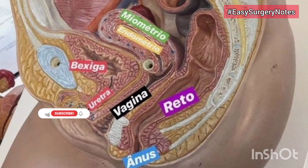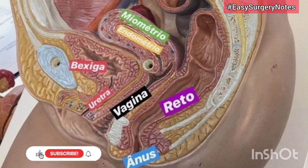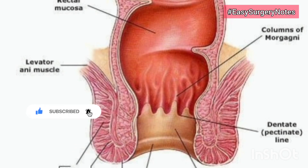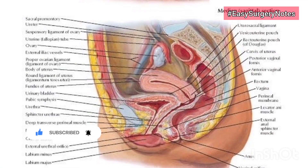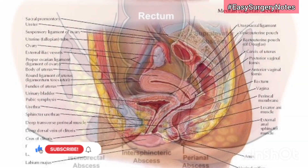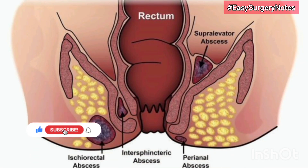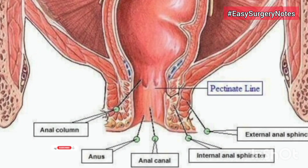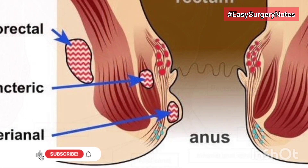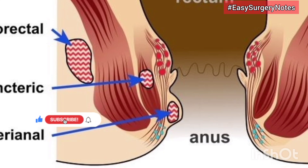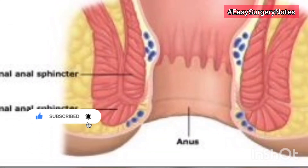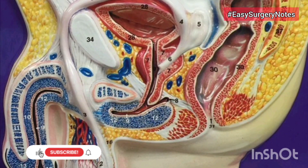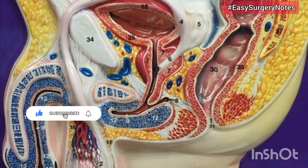Middle rectal artery supplies the muscle coat of the lower part of the rectum. The median sacral artery supplies the posterior wall of the anorectal junction. Venous drainage: the superior rectal vein drains into the inferior mesenteric vein; the middle rectal vein opens into the internal iliac veins. Lymphatic drainage: the upper half of the rectum drains through inferior mesenteric nodes; the lower half through the internal iliac nodes. Nerve supply: the rectum is supplied by both sympathetic (L1-L2) and parasympathetic (S2-S3-S4) nerves through the superior rectal and inferior hypogastric plexus. Sympathetic nerves are vasoconstrictors, inhibitory to rectal musculature, and motor to the internal sphincter; parasympathetic nerves are motor to the musculature of the rectum and inhibitory to the internal sphincter. Sensations of distension pass through parasympathetic nerves, while pain sensations are carried by both.